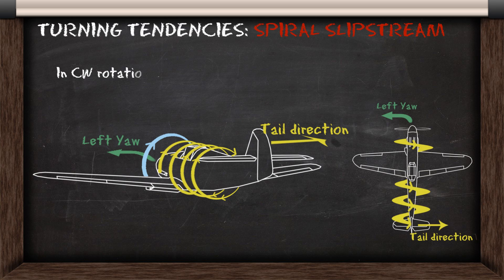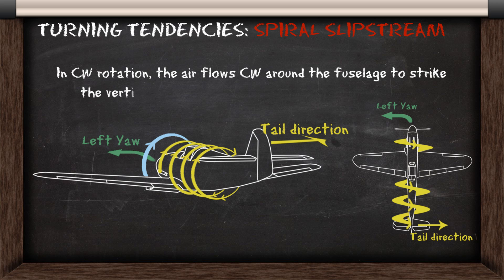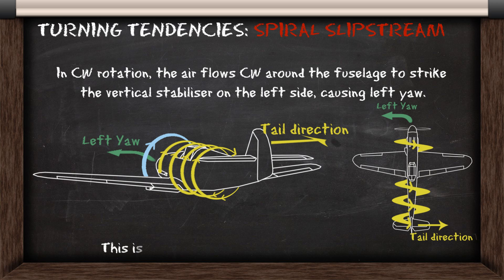For spiral slipstream, in clockwise rotation the air flows clockwise around the fuselage to strike the vertical stabilizer on the left side, causing a left yaw. It's strongest at low airspeed and high thrust.